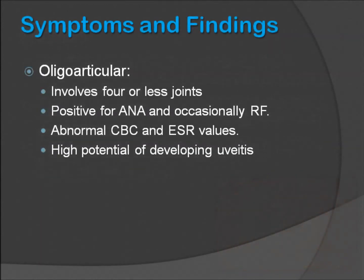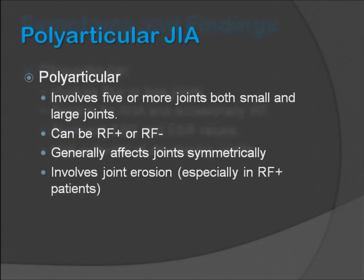Let's now go over some of the features of these individual forms of JIA. Slide 8 shows some features of oligoarticular JIA. It typically involves four or fewer joints, is positive for ANA and occasionally for rheumatoid factor. Patients with oligoarticular JIA can have an abnormal CBC and sed rate values, and they have a very high potential for developing eye inflammation.